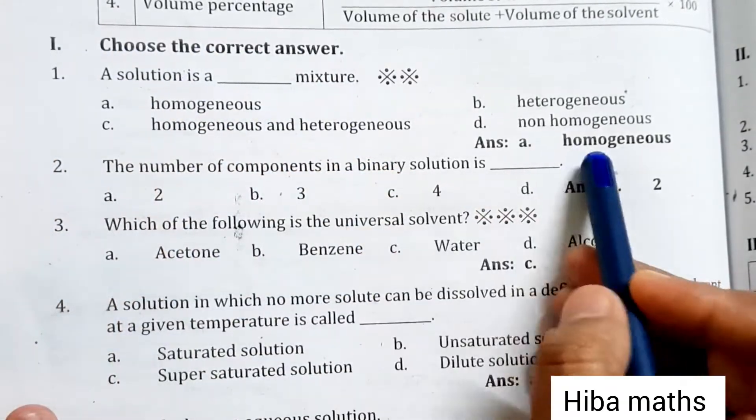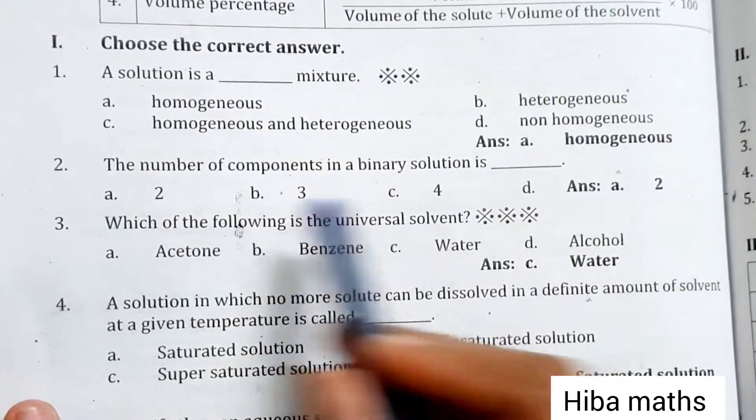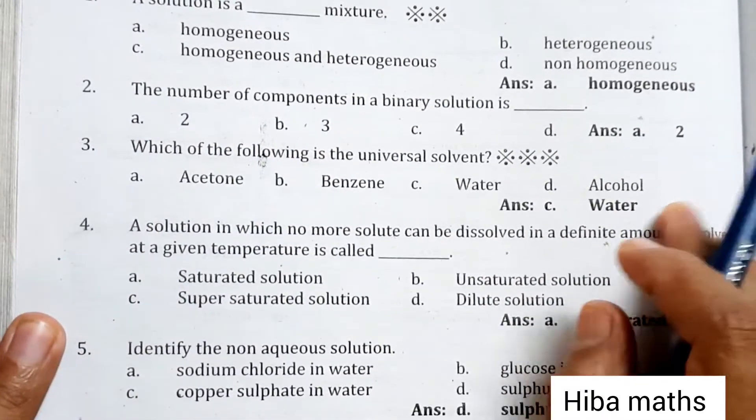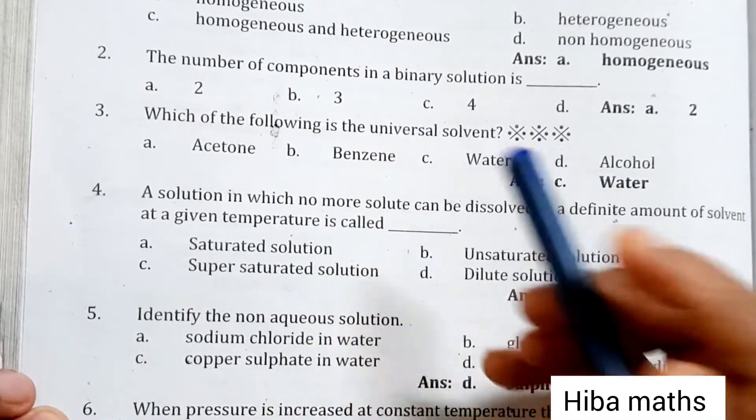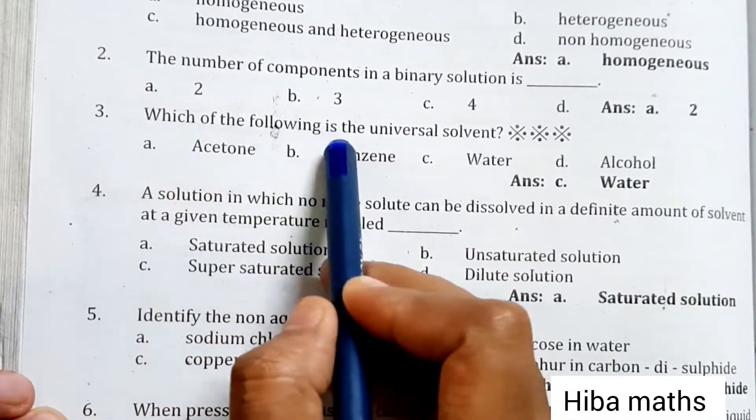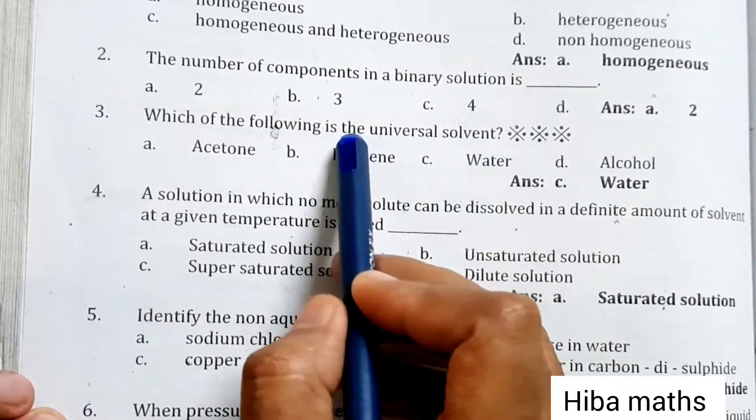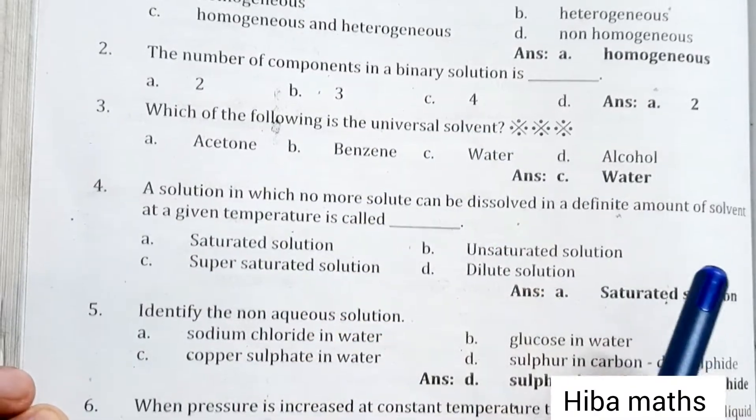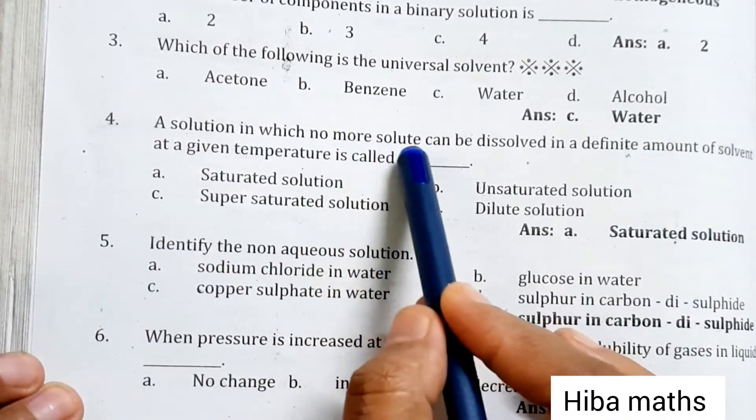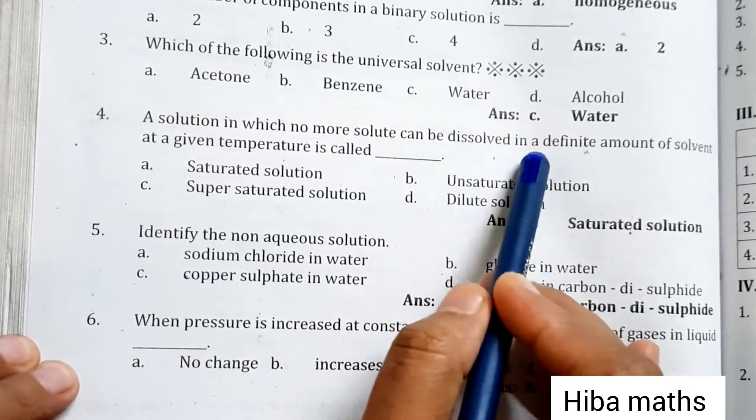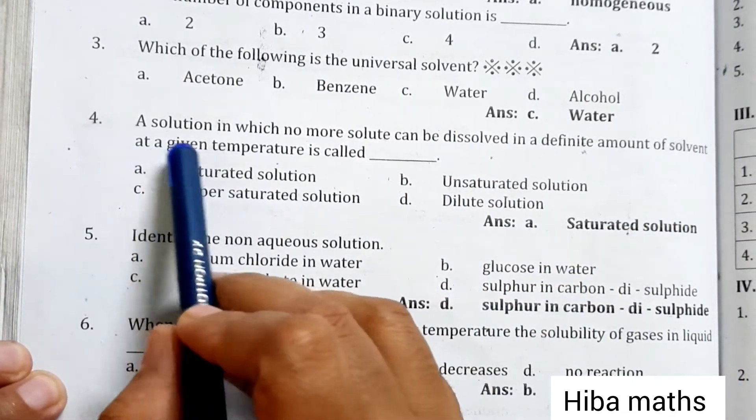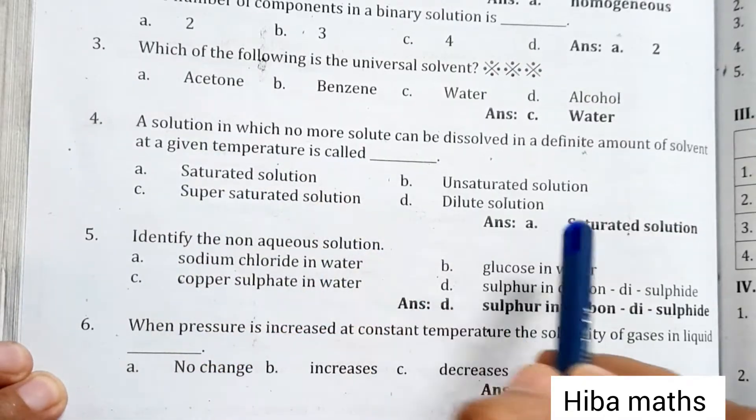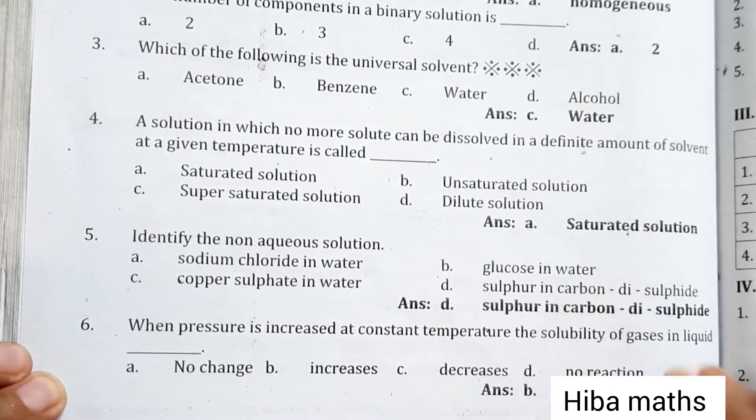A solution is a homogeneous mixture. The number of components in a binary solution is 2. Which of the following is the universal solvent? Water. A solution in which no more solute can be dissolved in a definite amount of solvent at a given temperature is called a saturated solution.